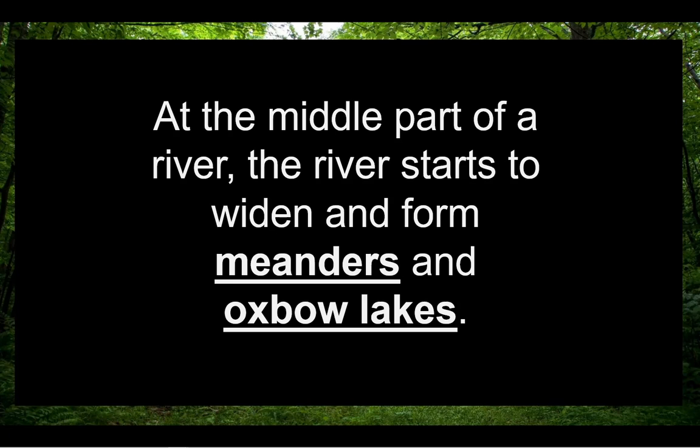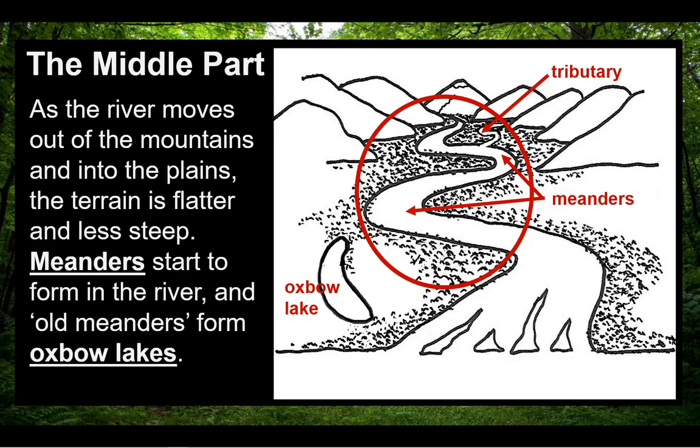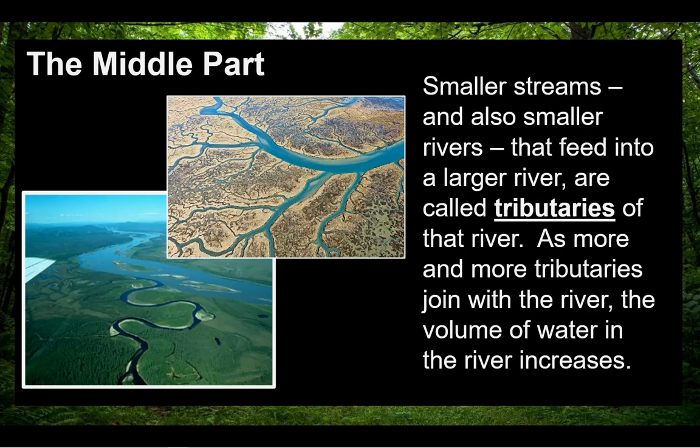At the middle part of a river, the river starts to widen and form meanders and oxbow lakes. As the river moves out of the mountains and into the plains, the terrain is flatter and less steep. Meanders start to form in the river, and old meanders form oxbow lakes. Smaller streams and also smaller rivers that feed into a larger river are called tributaries. As more and more tributaries join with the river, the volume of water in the river increases.